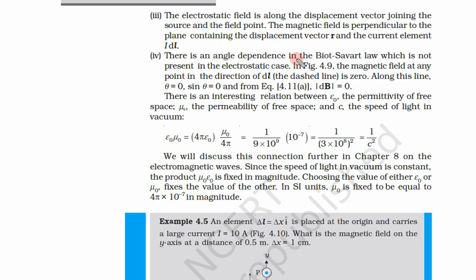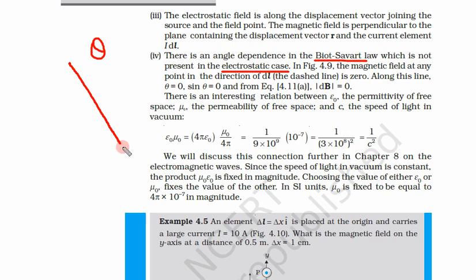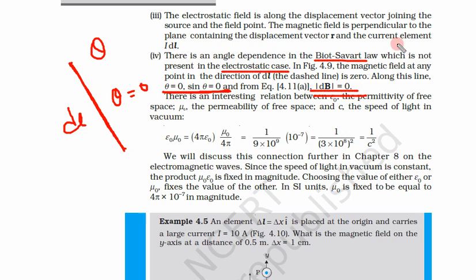There is also an angle dependence in Biot-Savart's law given by sin theta, which is not present in the electrostatic case. The magnetic field at any point in the direction of DL is zero. If R is in the same direction as DL, then theta equals zero, so sin theta equals zero, and the magnetic field also becomes zero.